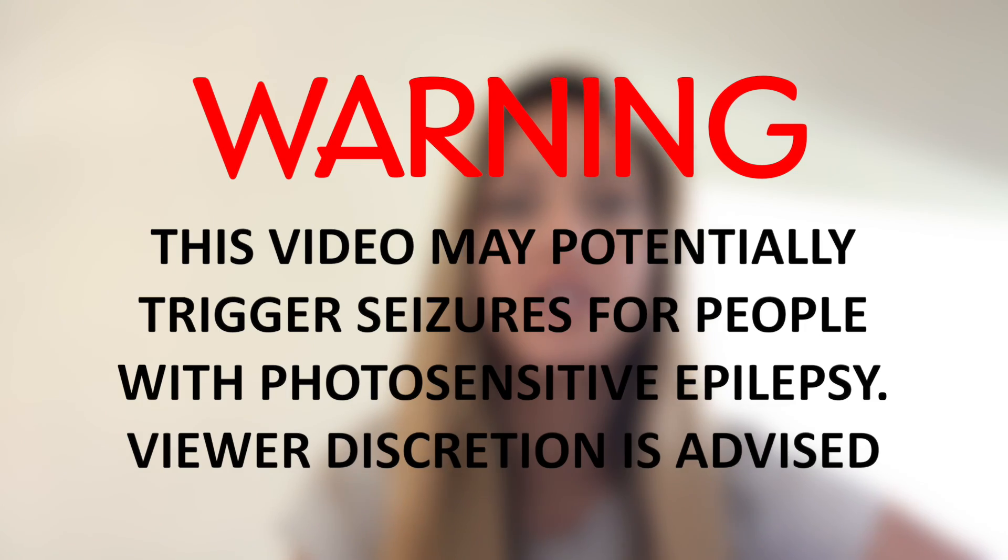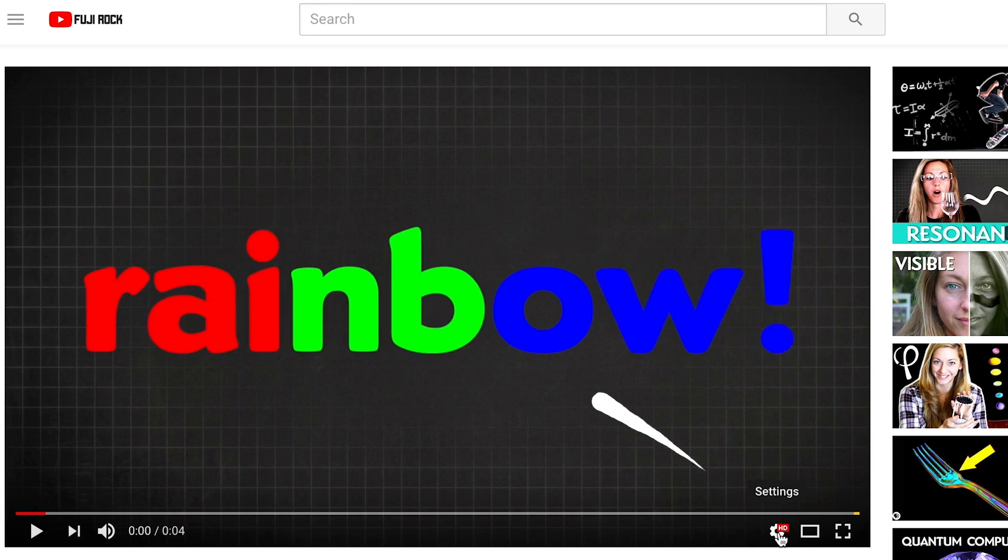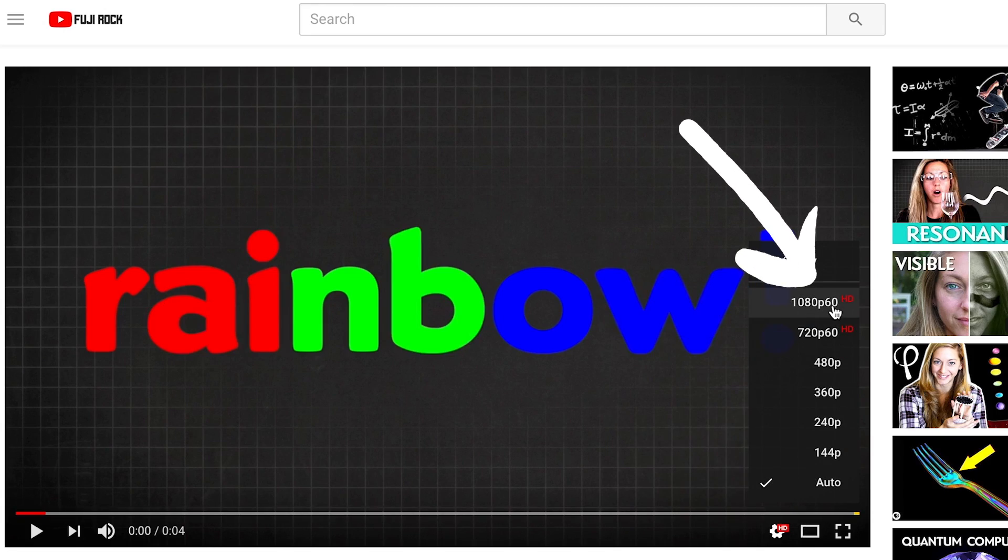Hey I'm Diana, you're watching Physics Girl and I want to show you something that I made. It's a video with a strong epilepsy warning - this video may potentially trigger seizures for people with photosensitive epilepsy. Viewer discretion is advised. This video is uploaded at 60 frames per second, so in order to see what I'm trying to show, you have to watch it at 60 frames per second.